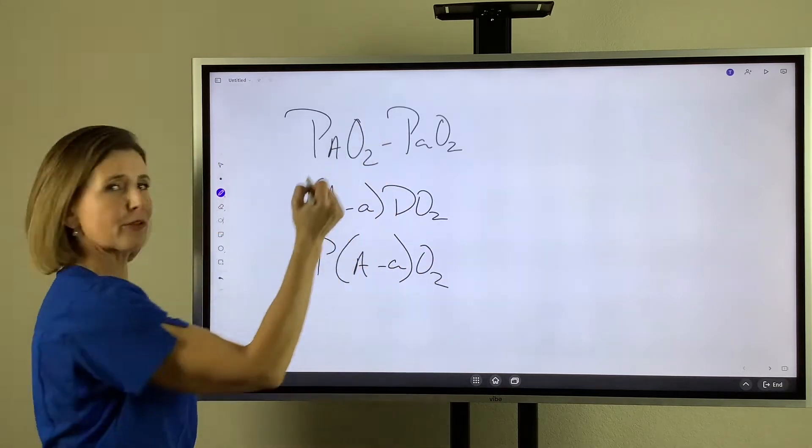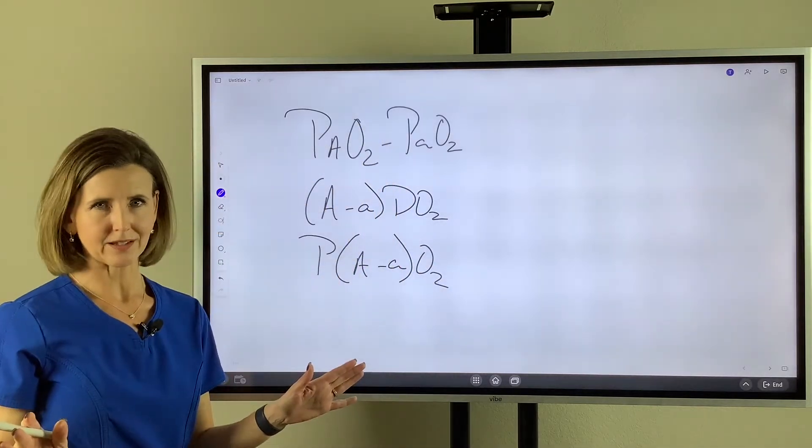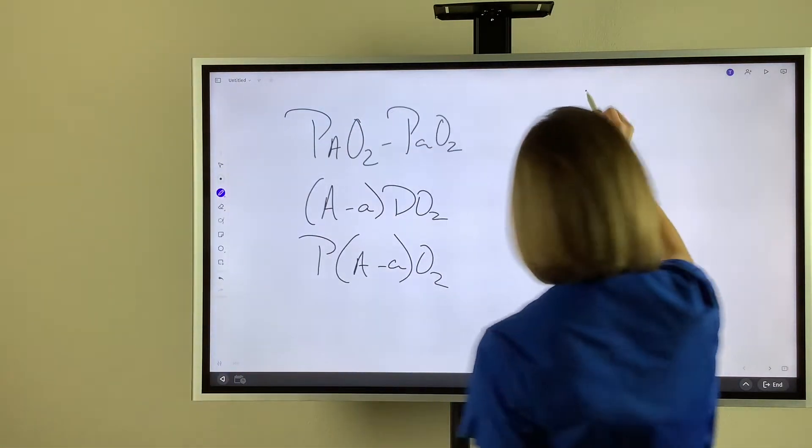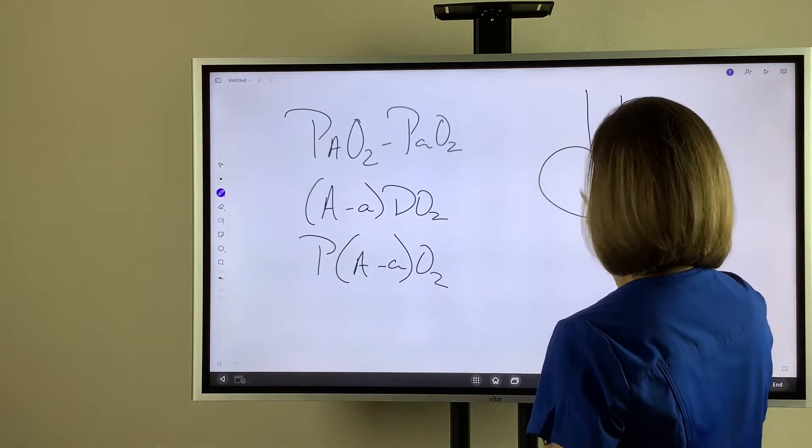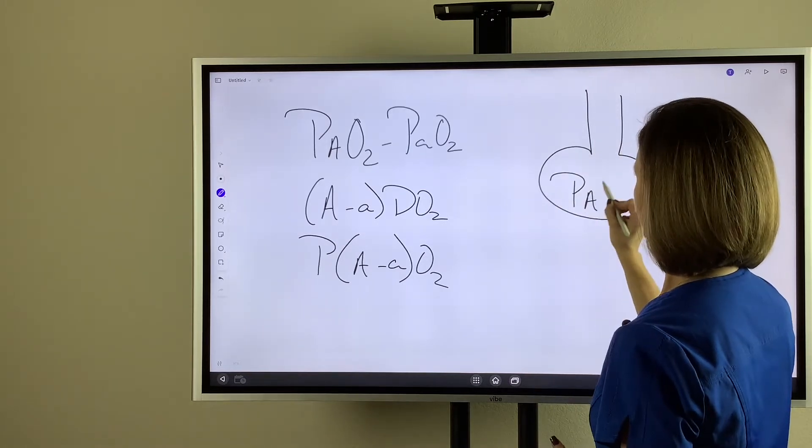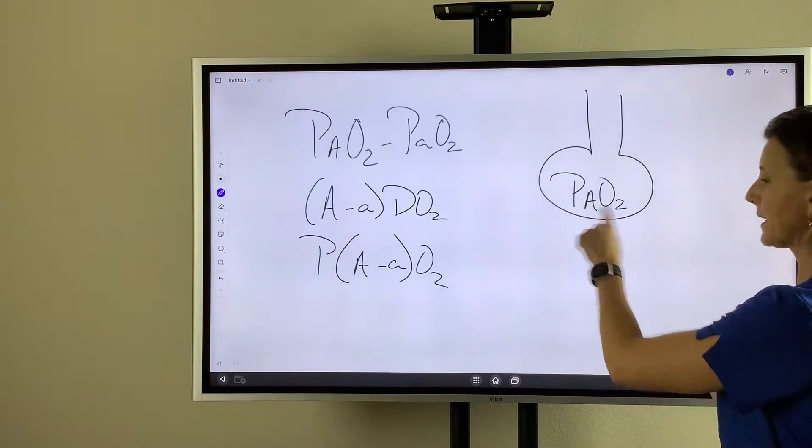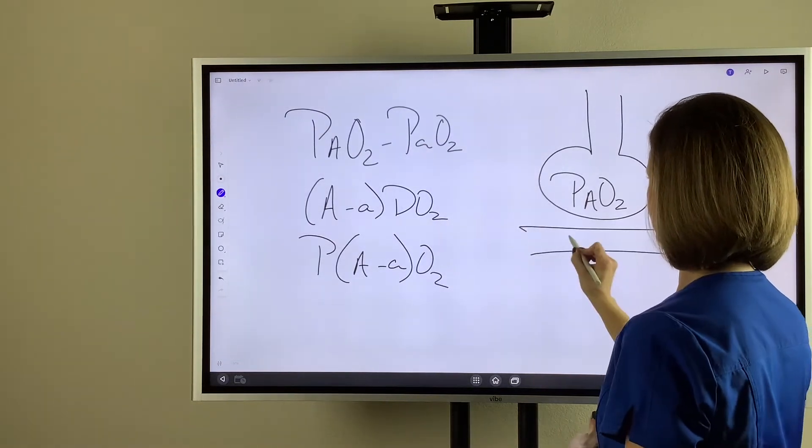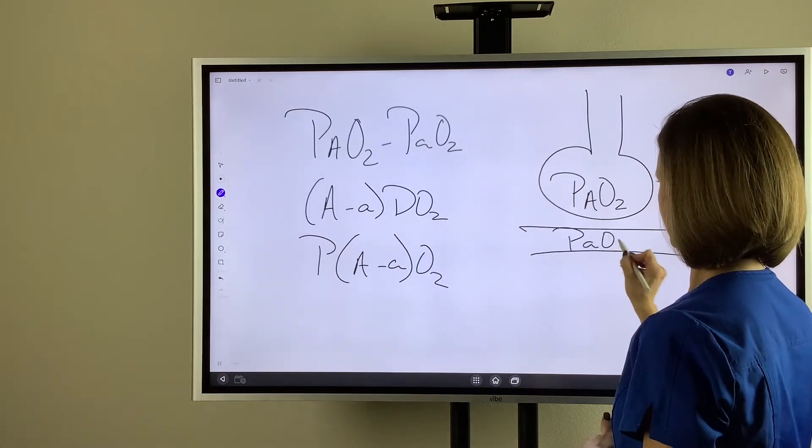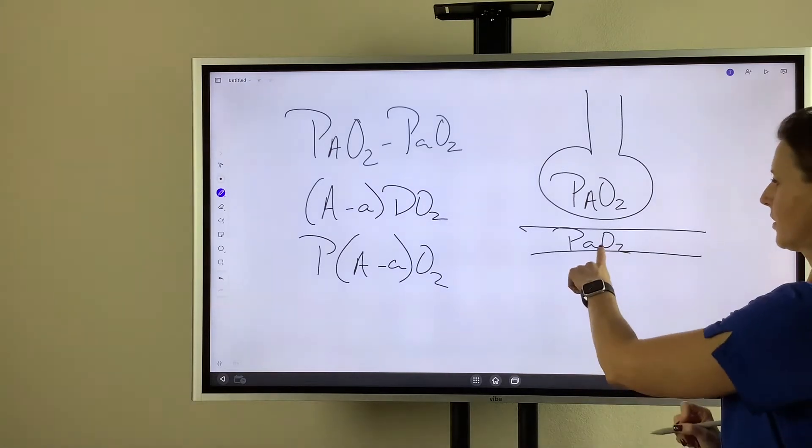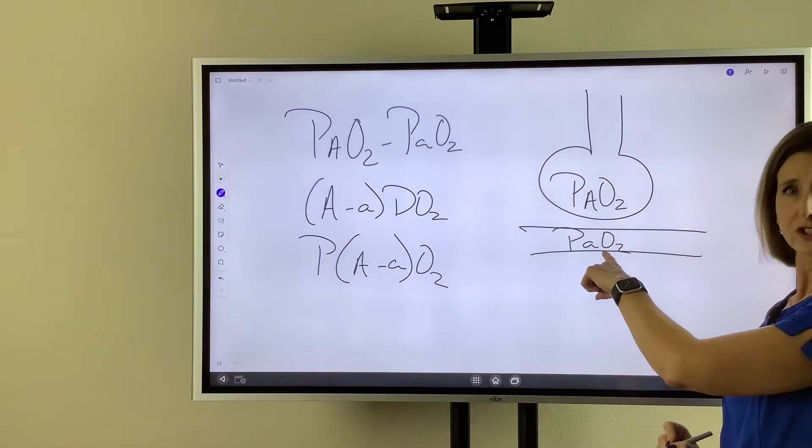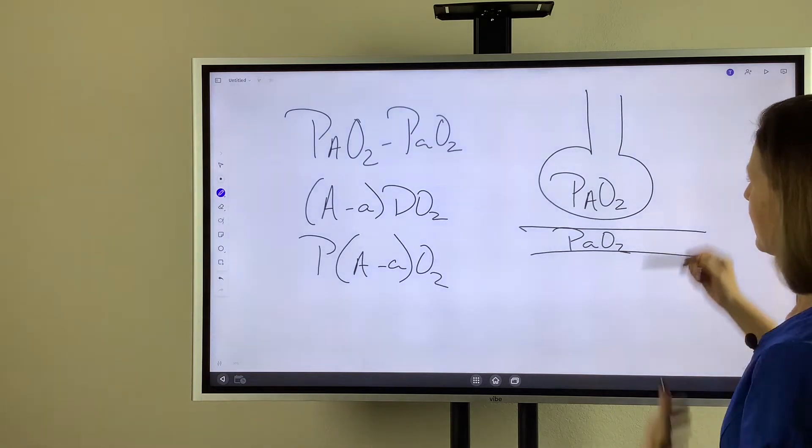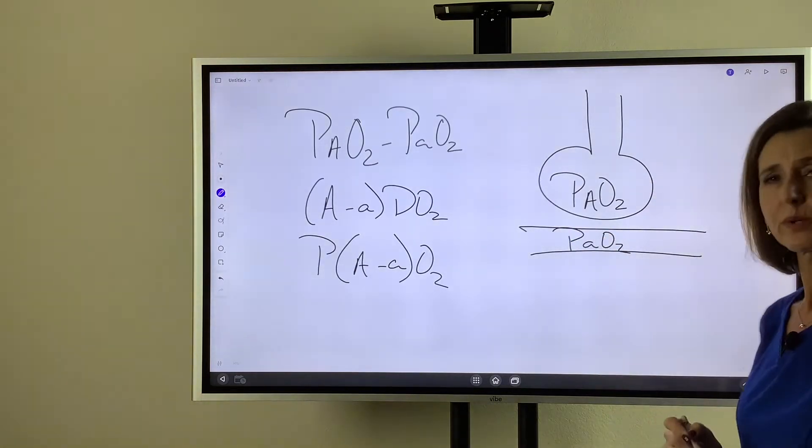All three of these refer to the same thing. Basically, we're talking about the pressure of oxygen in the alveoli. That big A stands for alveoli, and we're comparing it to the arterial oxygen pressure, the PaO2, that comes from a blood gas. We're comparing the difference between the two.